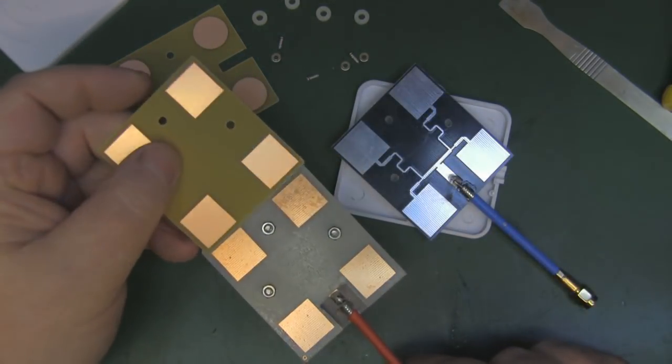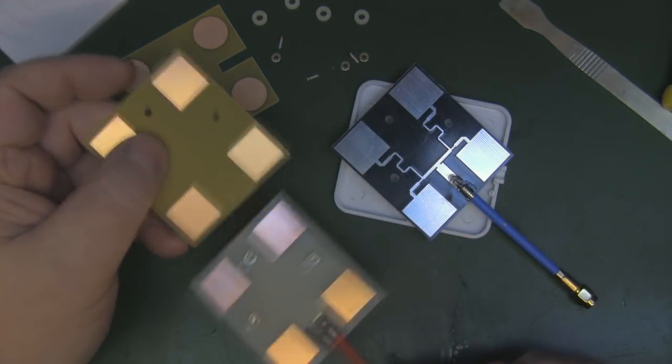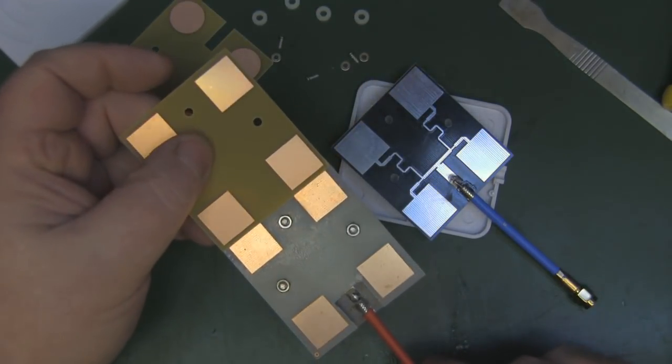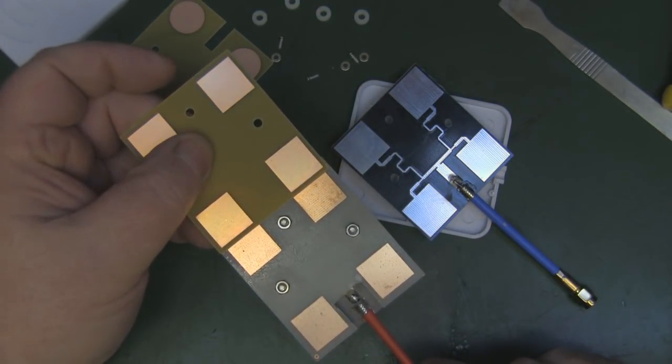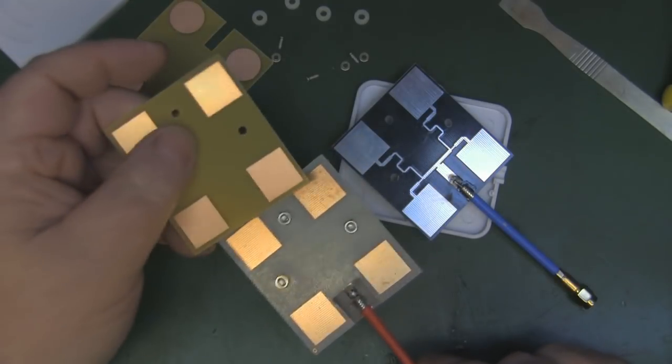So just comparing the top layer of parasitic elements from this antenna here, they do seem to be a little bit wider apart than these ones here.